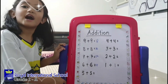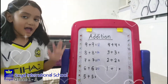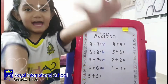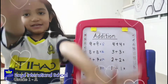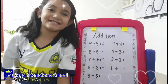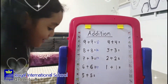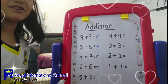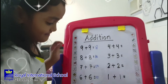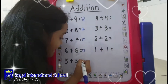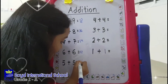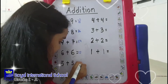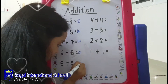5 plus 5. I have 5 in my hand. Equals 10. One and zero.